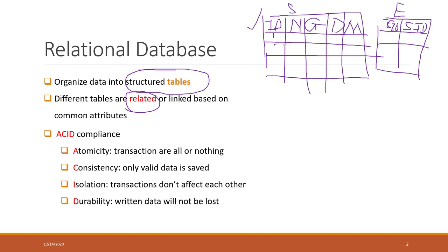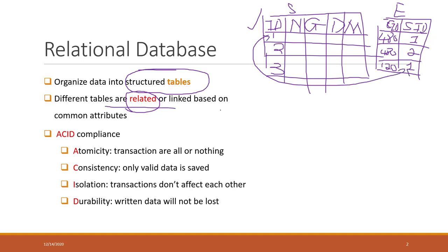For example, we have student one, two, three. In this enroll list, we have course 480, and student one is enrolled; another class 480 with student two enrolled. And probably we have another class — say, 120 — and student one enrolled in that class as well. So those two tables are related with each other, and that is why we call it a relational database.